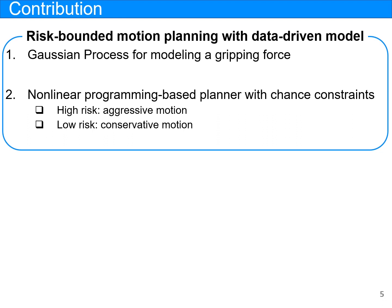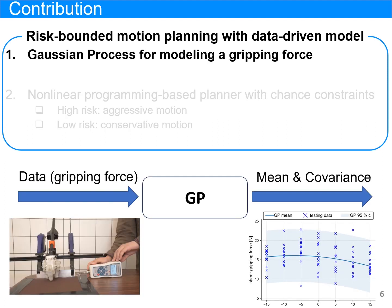Thus, we formulate the optimization-based motion planning with chance constraints. To model a gripping force as a random variable, we employ a Gaussian process by collecting the data set of the gripping forces, which allows the planner to design the robot's motion without losing the stochastic nature.